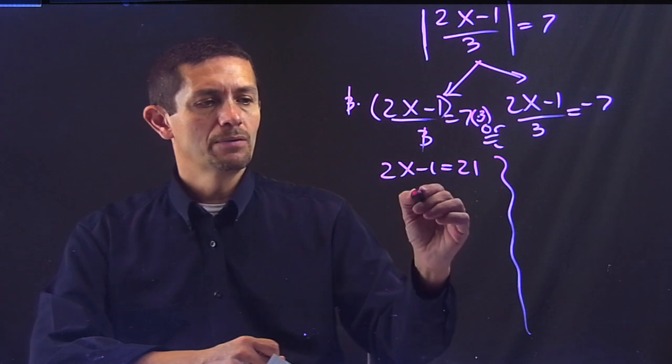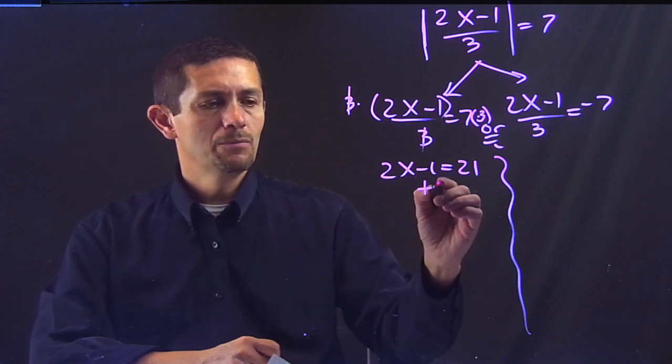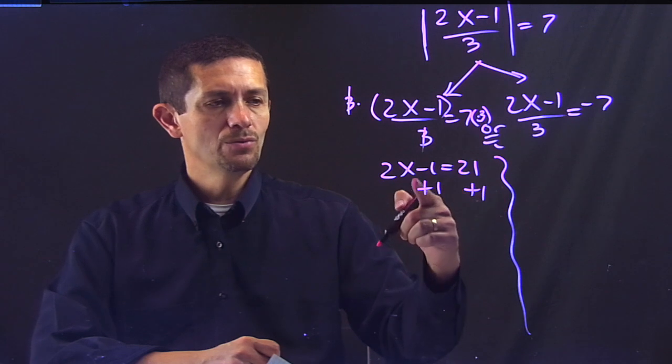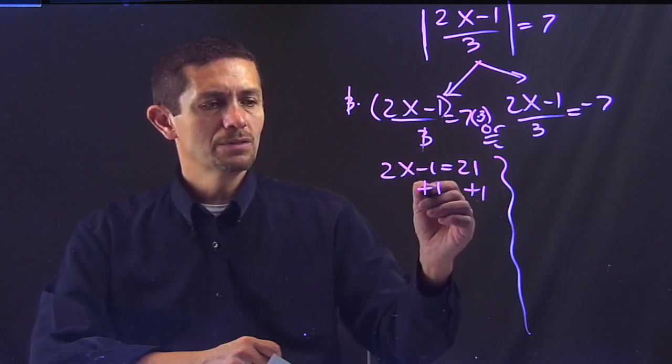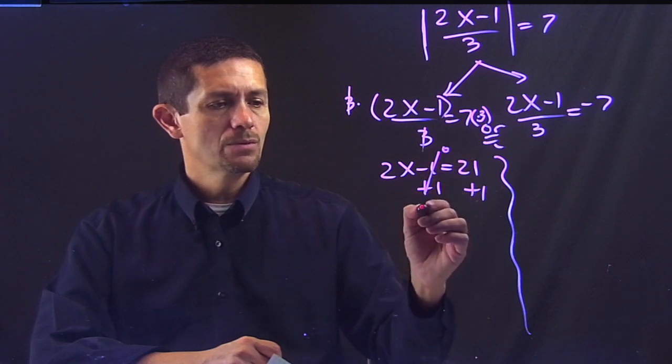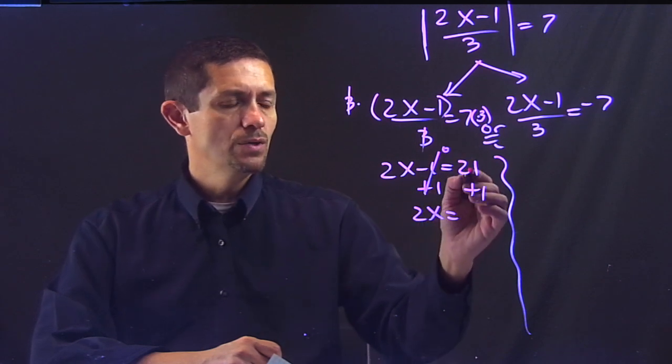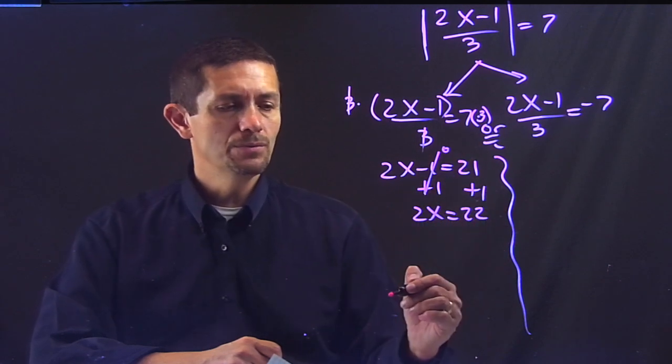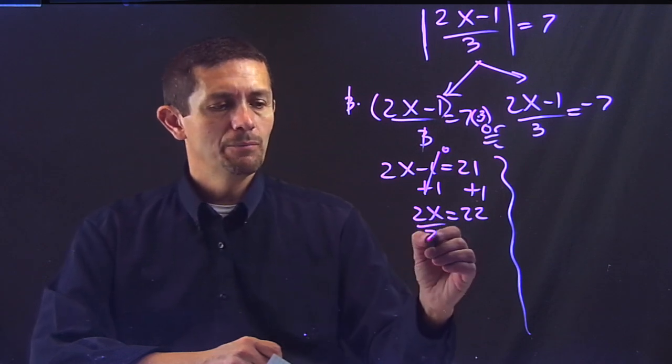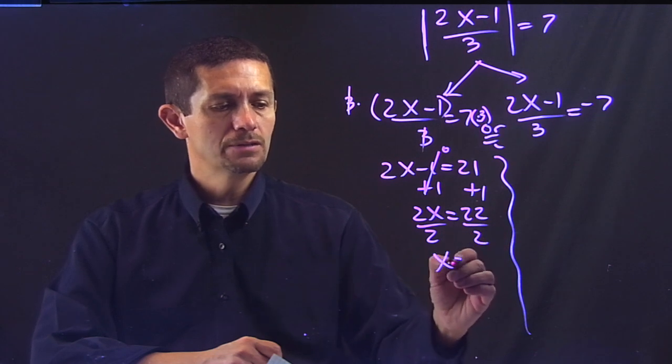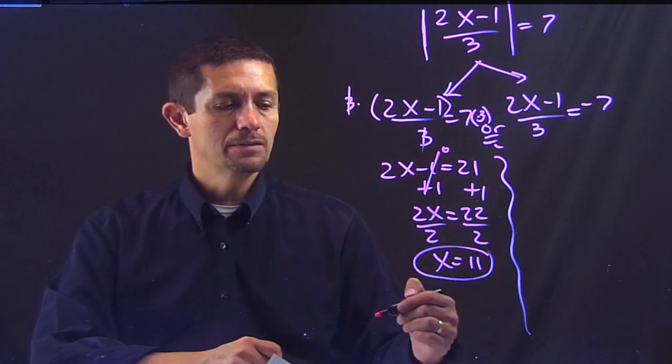So I'm going to have opposite of negative 1, positive 1 on both sides. Whatever you do on one side, you do on the other side of the equation. Negative 1 plus 1 is going to be 0. So I'm going to have 2x, 21 plus 1 is 22. And your last step is to get rid of whatever is multiplying the x by dividing on both sides. And now I'm going to have x equals 11.